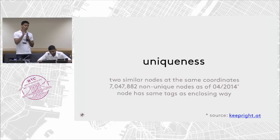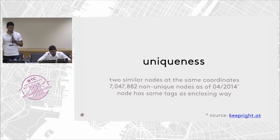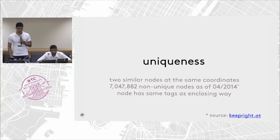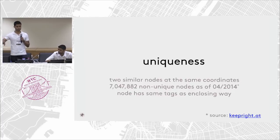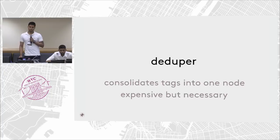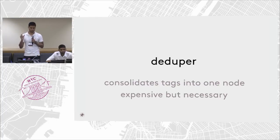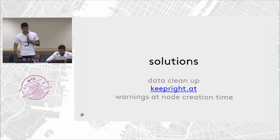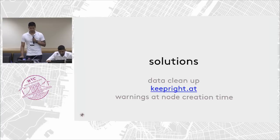Duplicate nodes is another problem. Nodes without names is a problem, and then having multiple nodes with the same name is also a problem — especially in a geocoding context. If you search for Union Square Park and get two duplicate nodes, it's not a good experience. This can happen when you have nodes at the same coordinates, or a node that shares tags and a name with an enclosing way. A common solution is deduplication — a deduper that finds nodes with the same lat-long and name, unions them, and ensures only one node per location with that name. It's expensive but necessary. To ensure data quality going forward, Keepright is a good tool for identifying these problem areas.